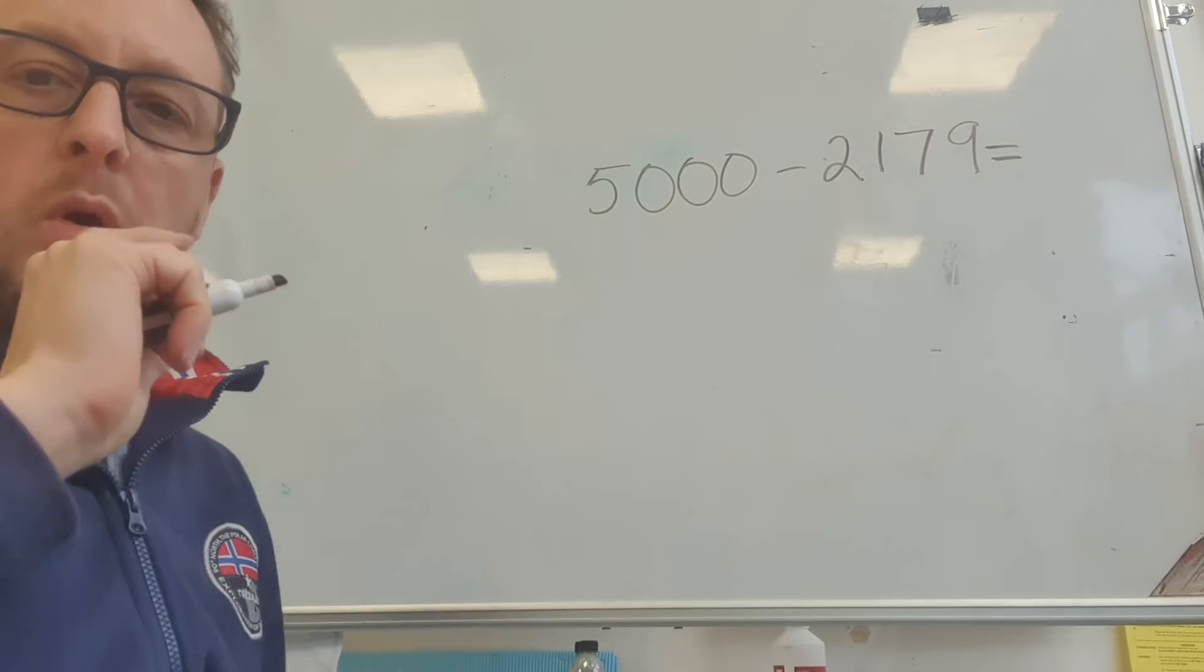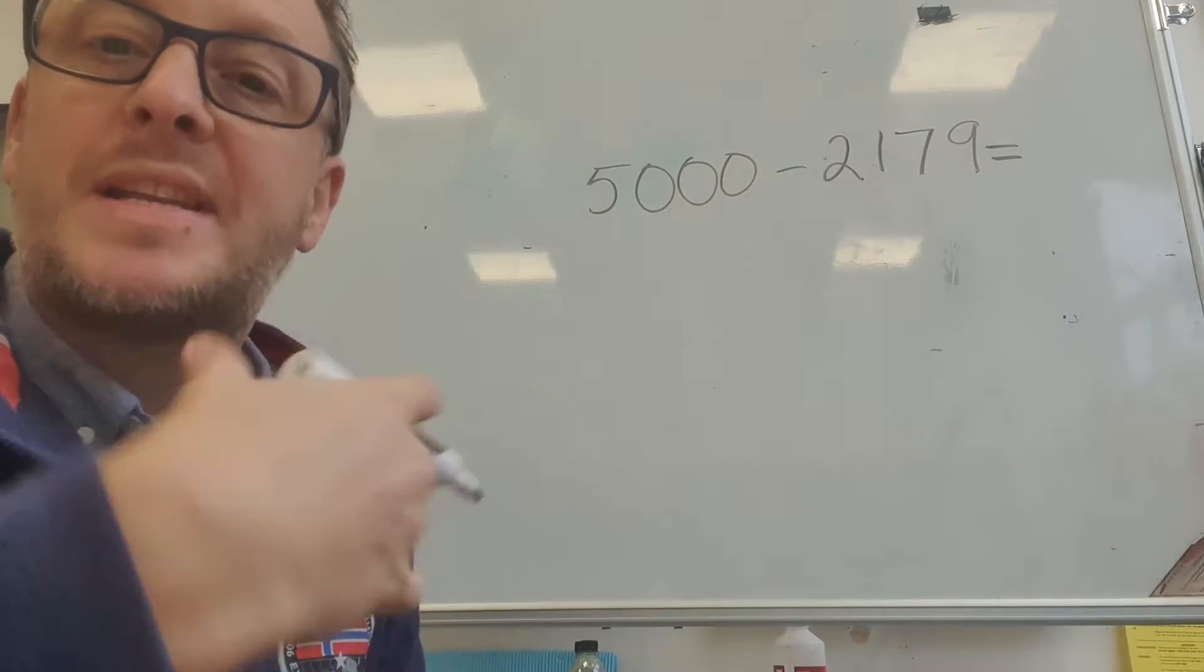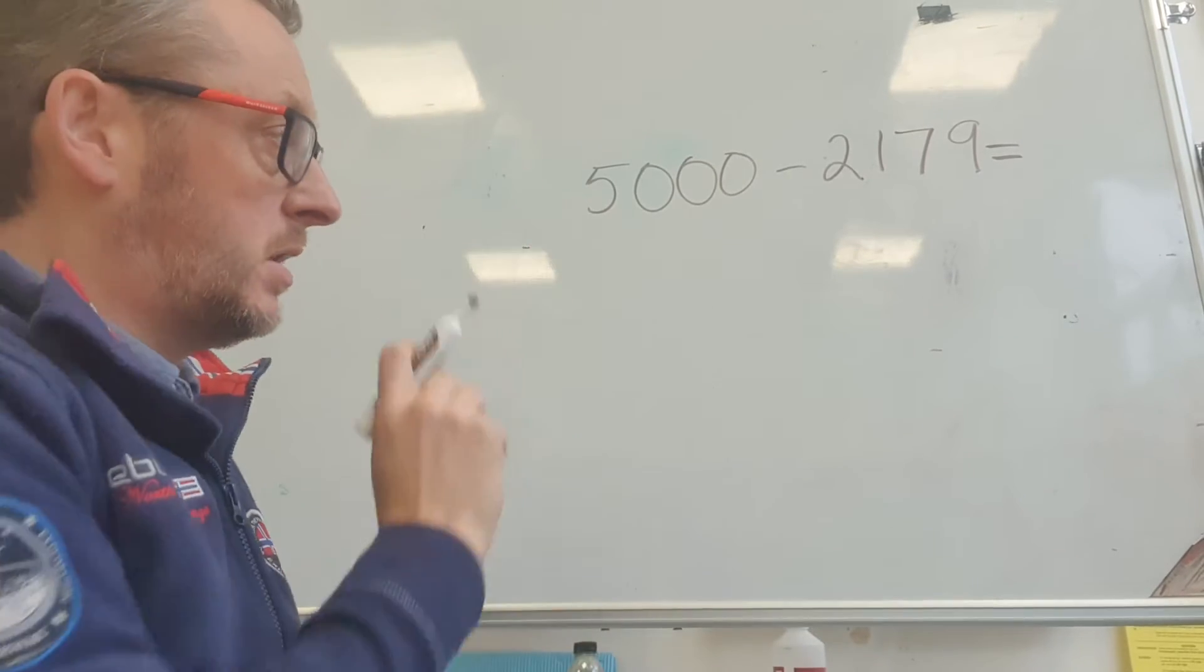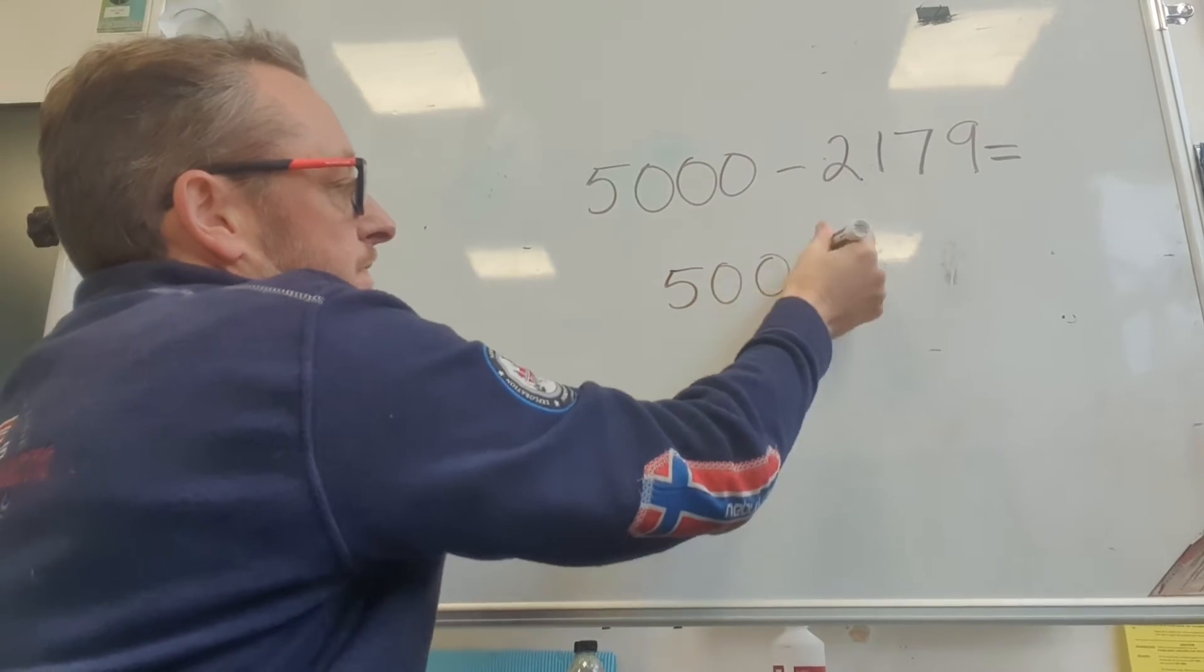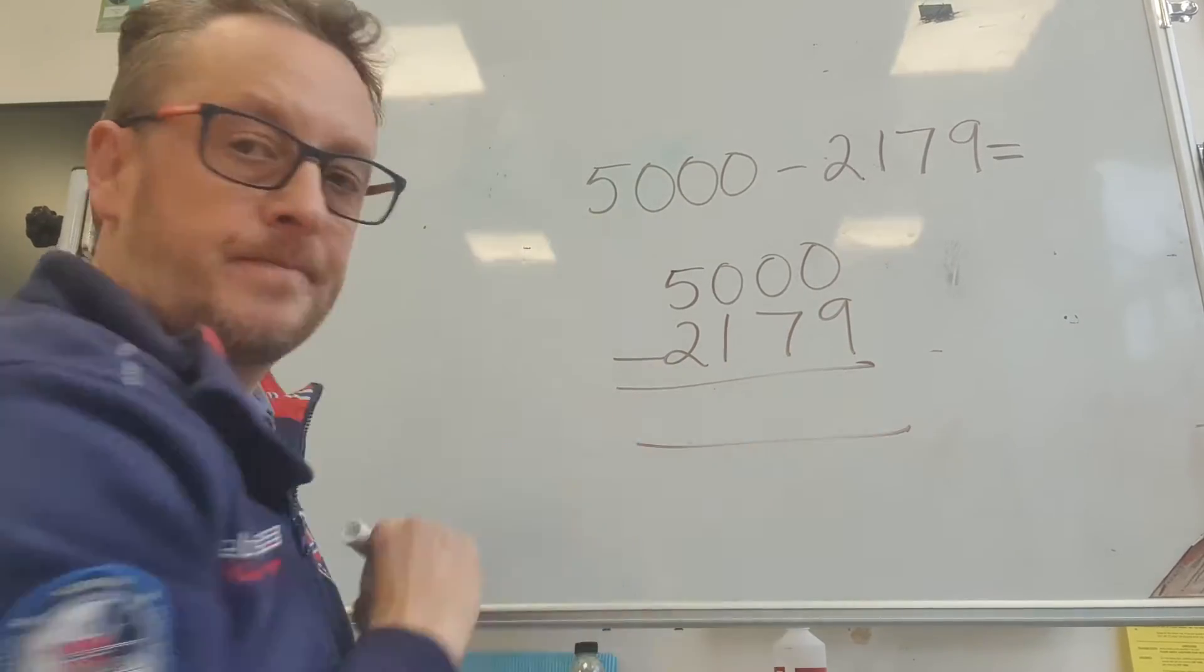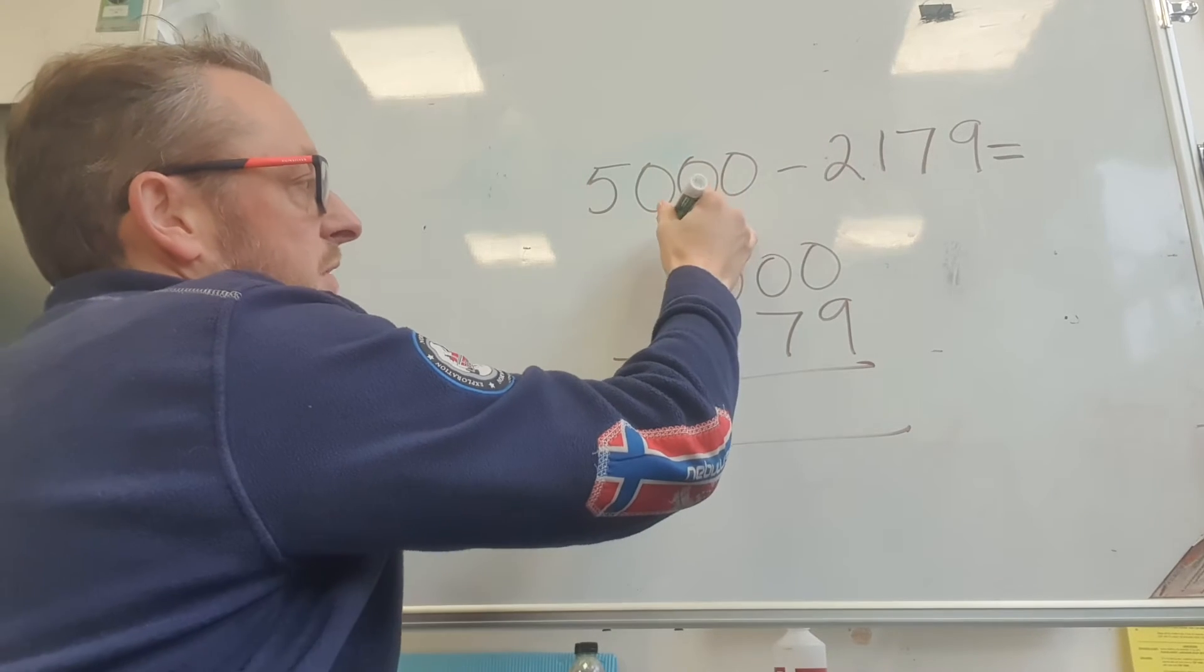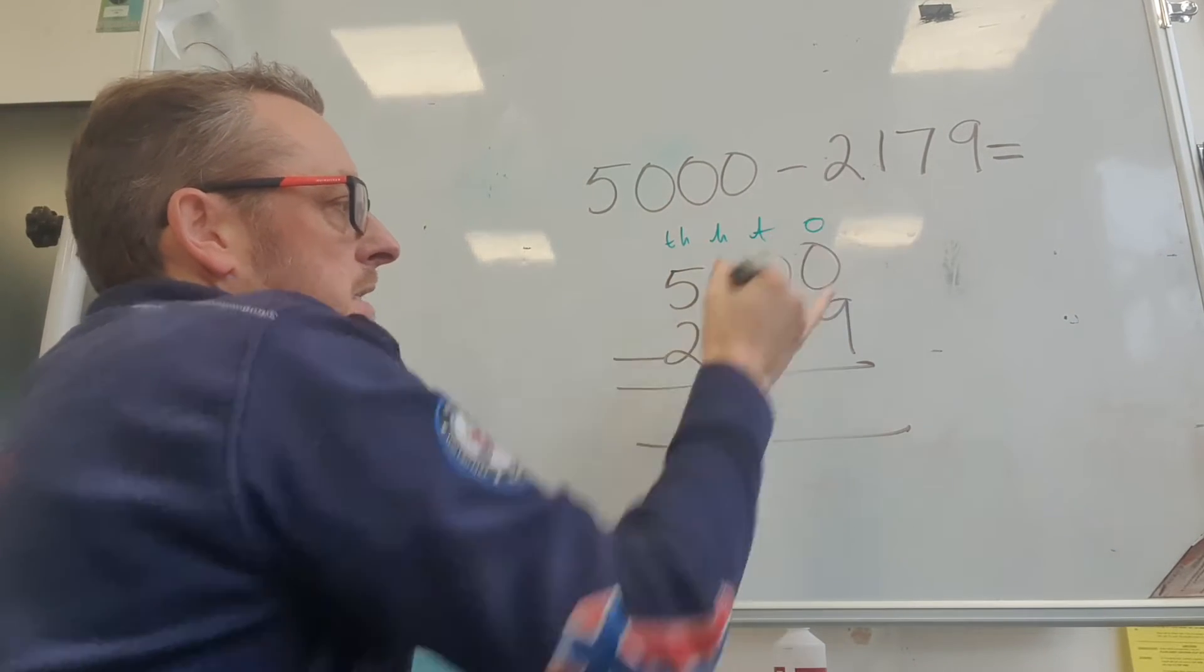We're tending to do column subtraction at the moment, aren't we? So we could do that. Okay, 5,000 subtract 2,179. And put our place values on: thousands, hundreds, tens, and ones.